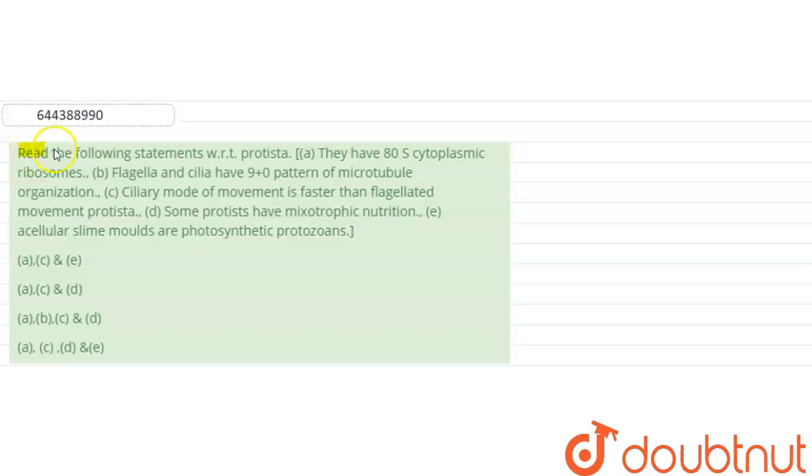So the question is, read the following statements with respect to protesta. Option A: they have ATS cytoplasmic ribosomes. B: flagellae and cilia have 9 plus 0 pattern of microtubule organization. C: ciliary mode of movement is faster than flagellated movement of protesta. D: some protesta have mixotrophic nutrition. And E: acellular slime molds are photosynthetic protozoans.